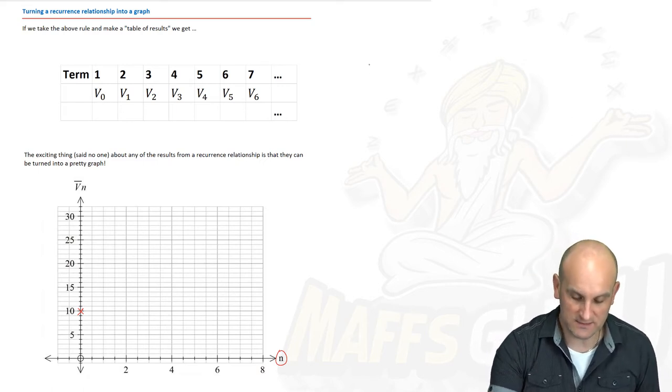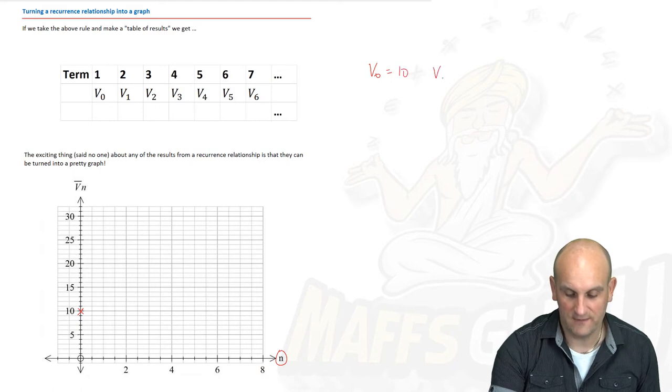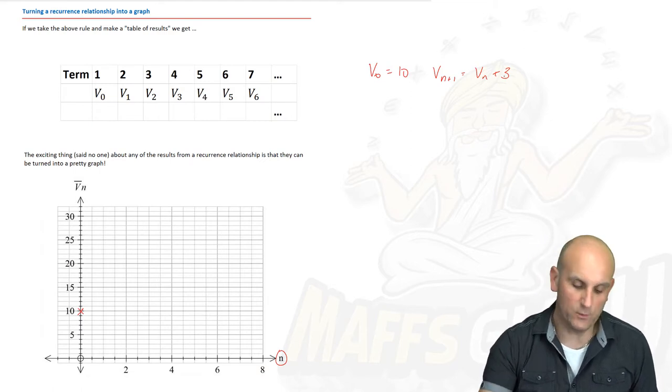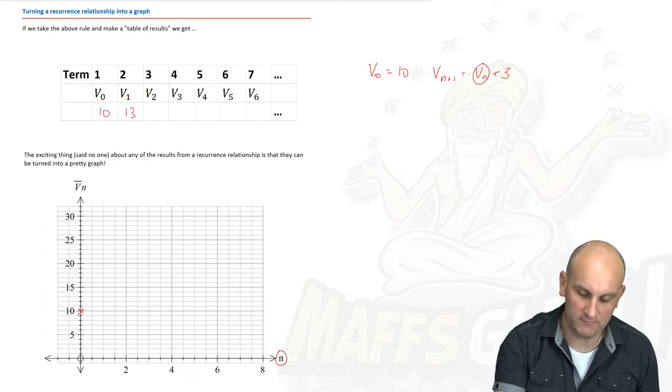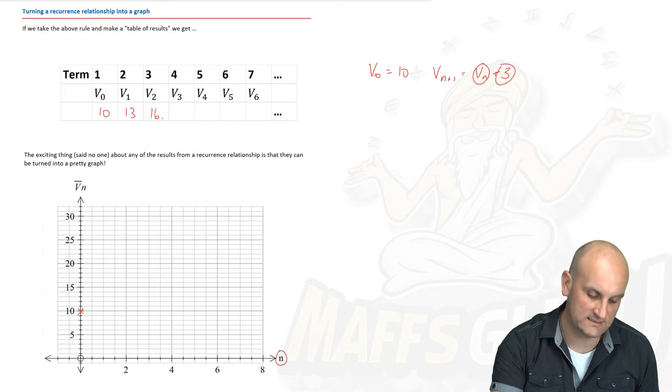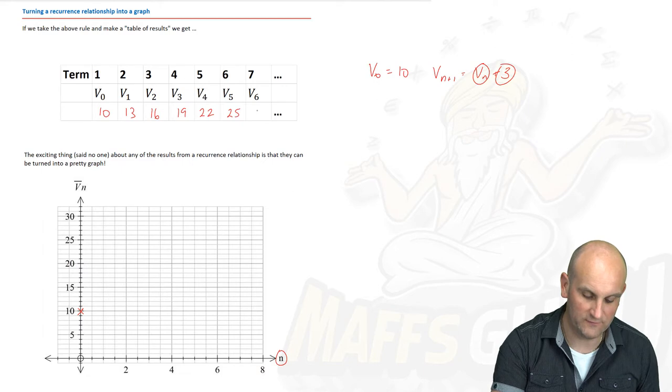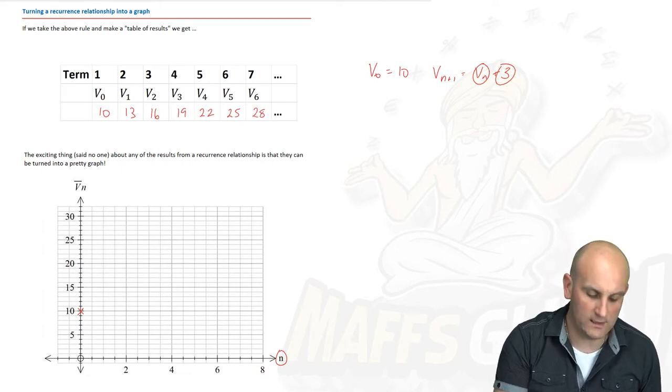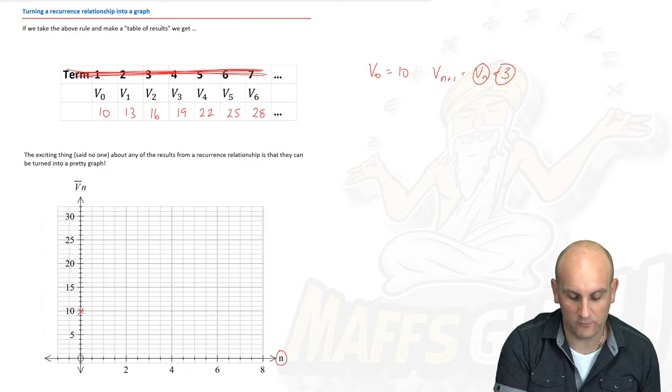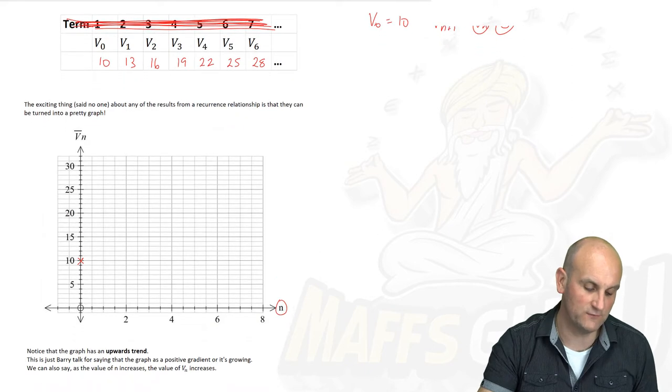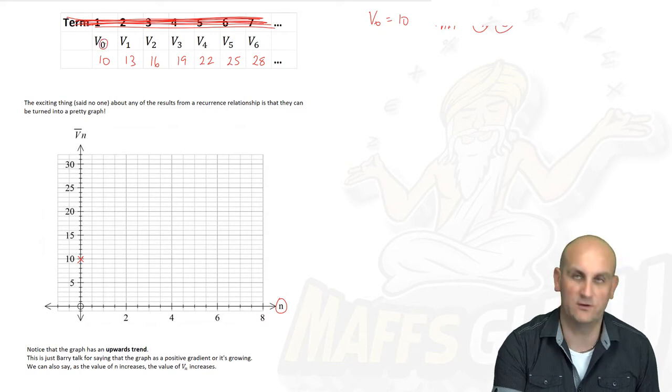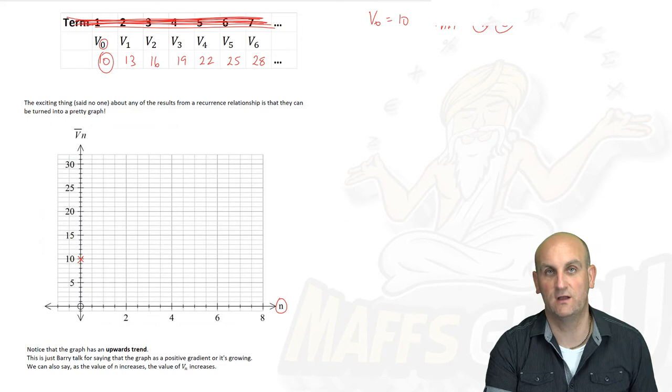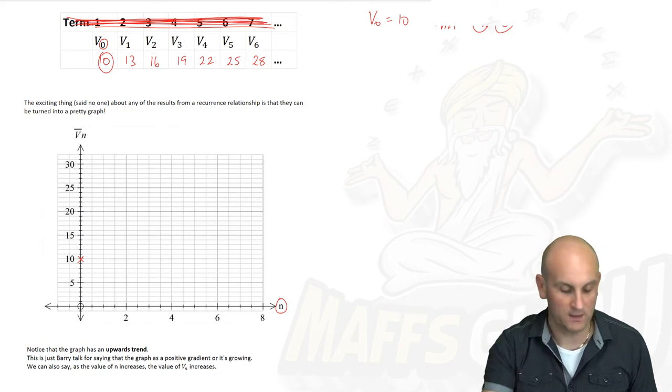So what I'm going to do is I'm going to take my previous recurrence relationship, which was V0 is equal to 10, V of n plus 1 is equal to V of n plus 3, and I'm going to turn that into what I'm going to call a table of results. So we knew that V0 was equal to 10. We knew that V1 would be 13 because we're going to take our current term, add 3 and give me my next term. And then 16, 19, 22, 25 and 28. While we know that we have these terms going 1, 2, 3, 4, 5, 6, 7, I'm actually going to ignore that for the moment because I'm actually going to look at the values of V0, V1, V2, V3. Because what I'm now going to say is, well, each of these little subscripts, these lower numbers and the big numbers actually stand for a set of coordinates. Mind blown.